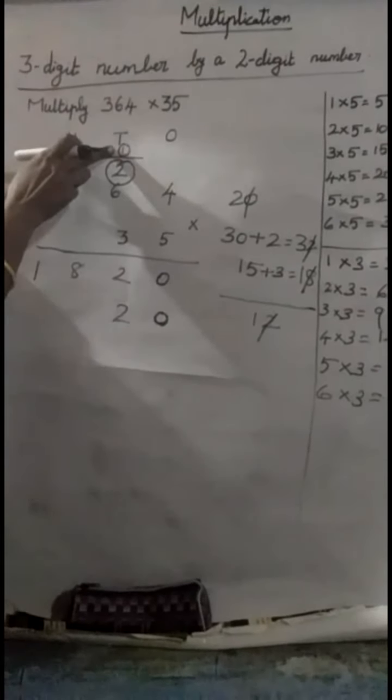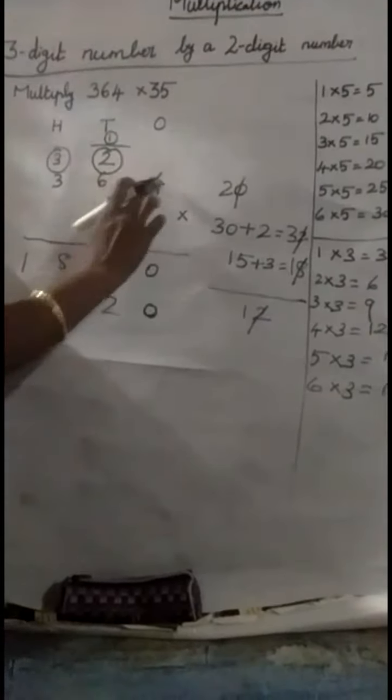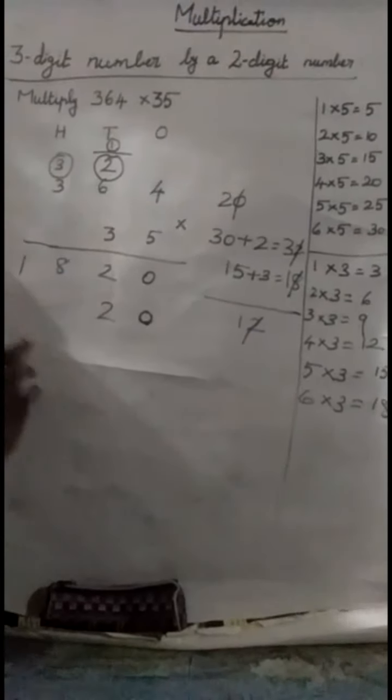Put one line and above the line. This is a new reminder. So, above the line, write the reminder. 1. Now, 4, 3s are 12. 2 here. 1 in the 10s place. Next.